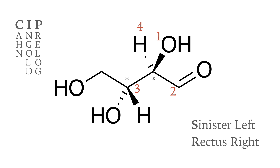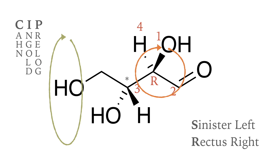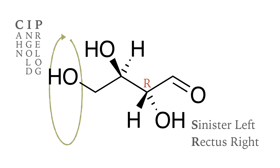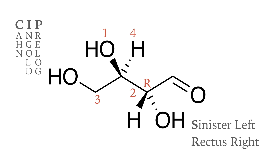Take care that the atom with the lowest priority points away from you. Then you can connect the first three atoms with a circle. If the arrow turns clockwise to the right, we have an R stereocenter. Now we turn the molecule so that the hydrogen atom on the second stereocenter also points away from us, and you can see that this stereocenter also turns clockwise.